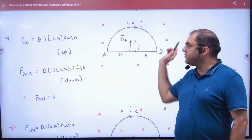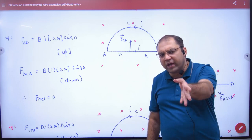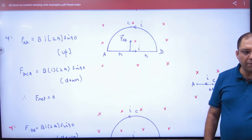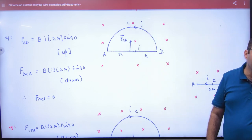The displacement of current from A to A, what is the answer? Zero, net zero. He will ask you about the DCA loop. Net force is zero. But tell me, what will the DCA segment do?